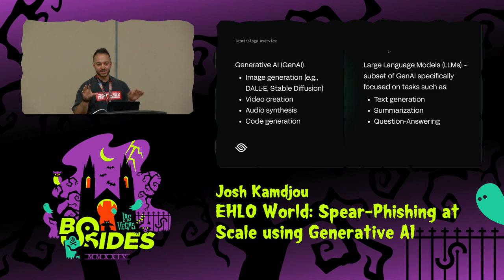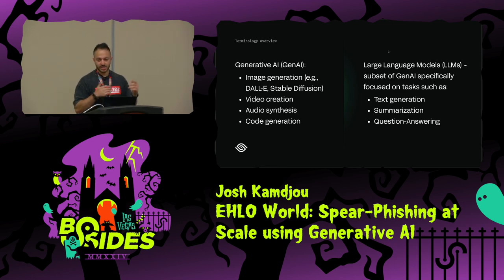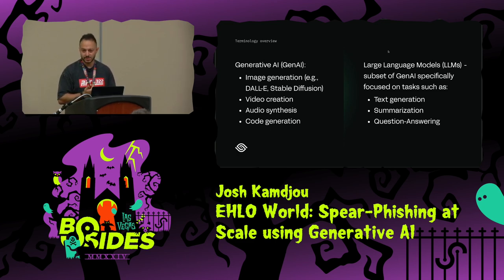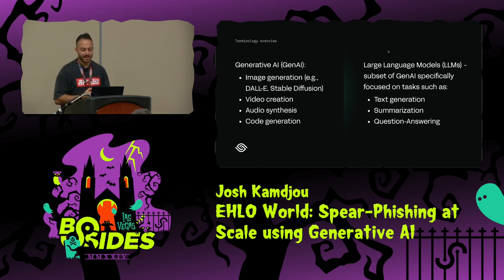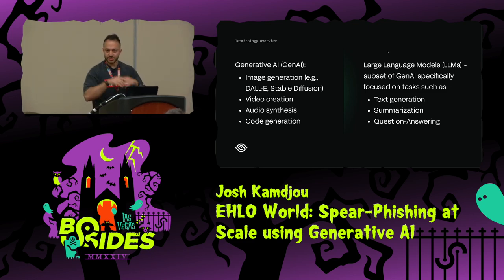Just to draw a distinction here: Gen AI is really the umbrella term that includes image generation, video creation, audio synthesis, code generation, and it also includes LLMs. So LLMs are a subset of Gen AI. LLMs focus more on text generation, summarization, that kind of thing. For the purpose of the talk, we're just going to use the umbrella term, but just so we're aware of the terminology.